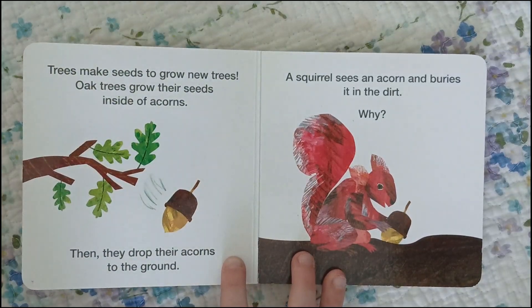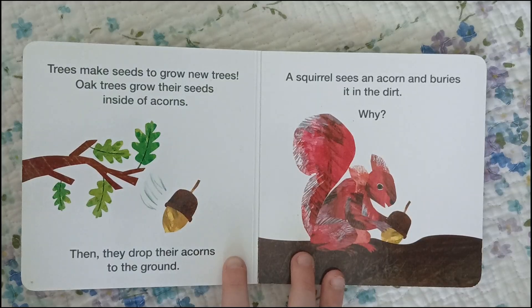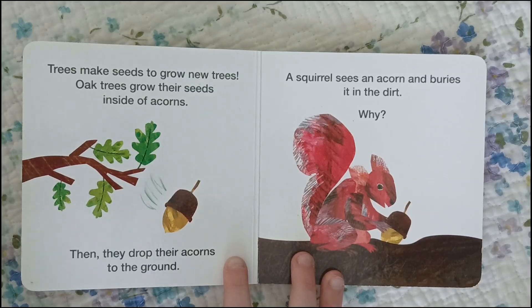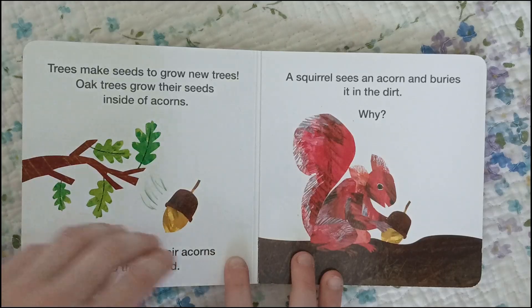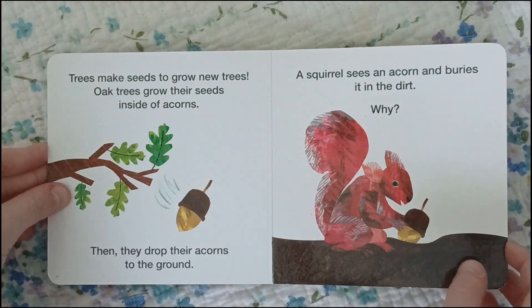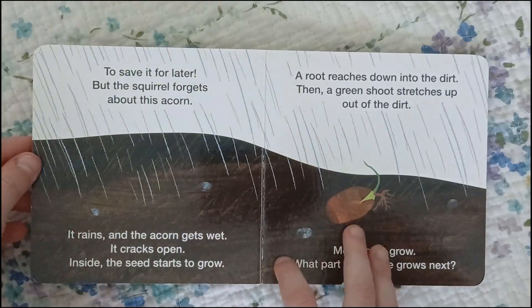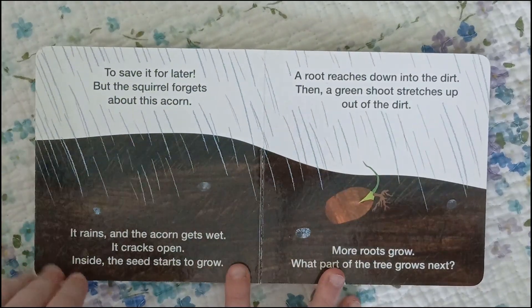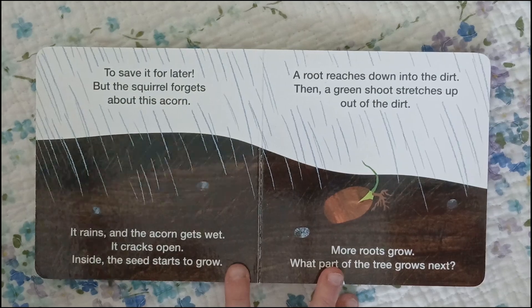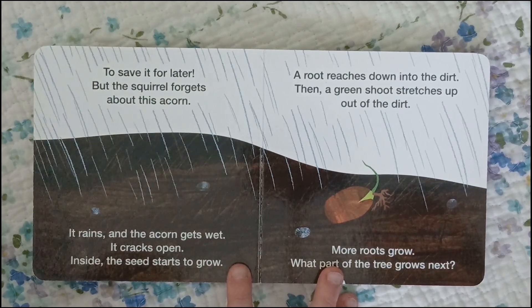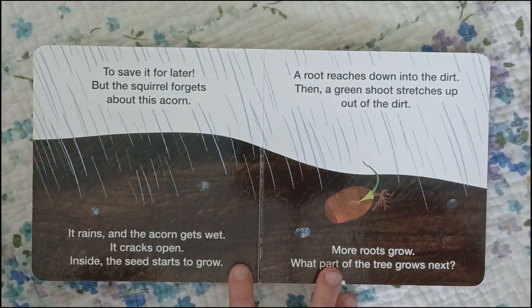Trees make seeds to grow new trees. Oak trees grow their seeds inside of acorns, then they drop their acorns to the ground. A squirrel sees an acorn and buries it in the dirt. Why? Have you ever seen an acorn? You collect them — you probably have some in your nature jar over there — to save it for later.